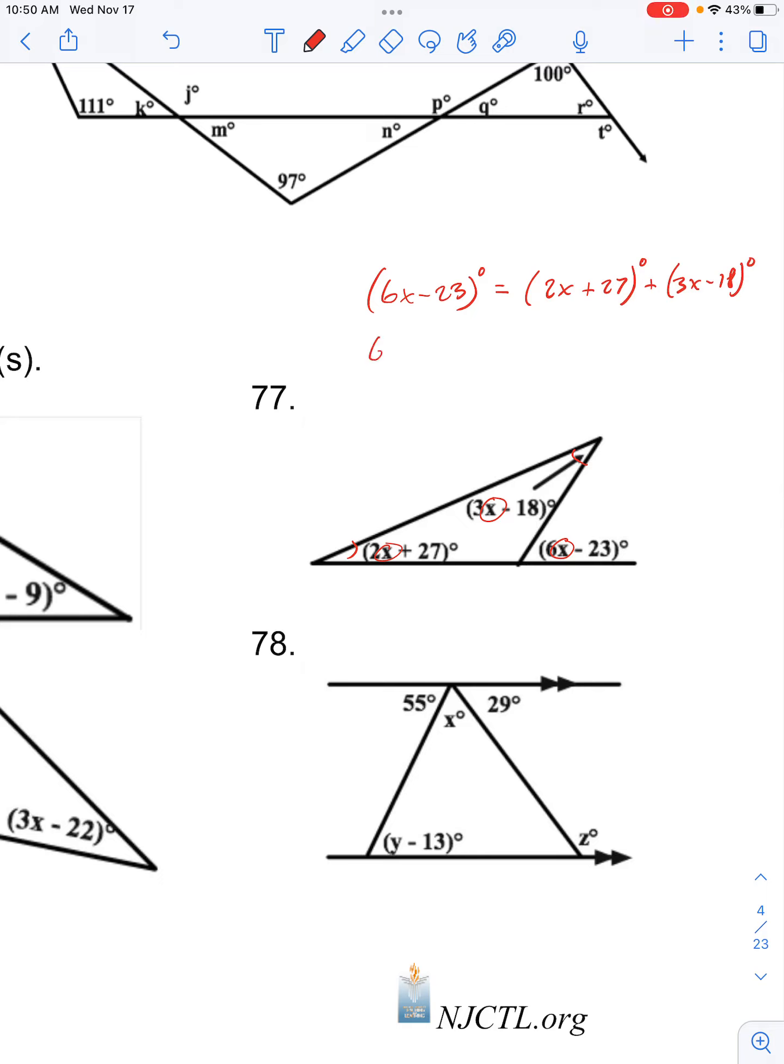We can simplify this. So 6x minus 23 degrees equals, and then 2x plus 3x is 5x, and then 27 minus 18 is plus 9. Then I'll bring this 5x over to the other side.